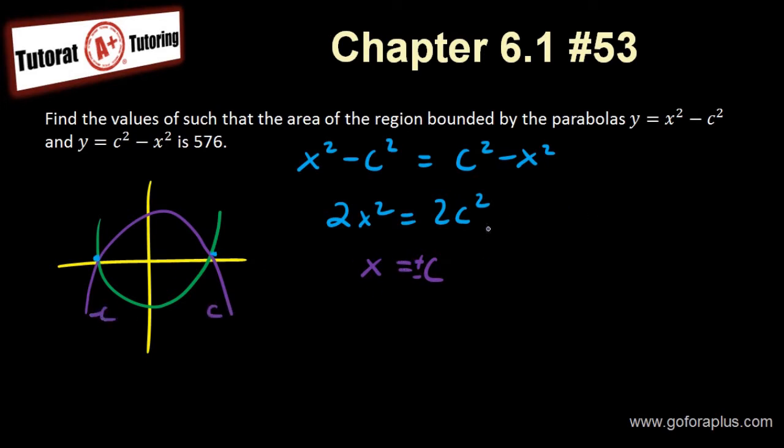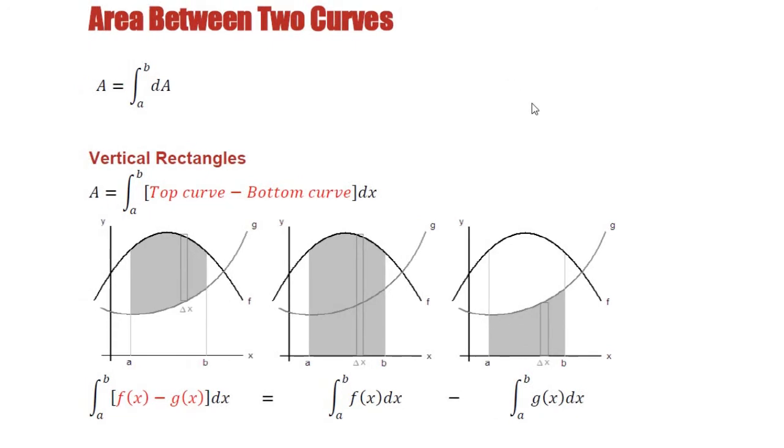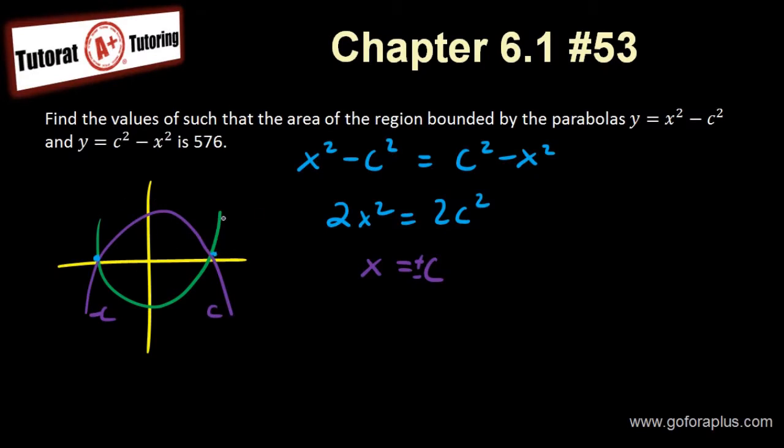So I know that is from minus c to c. So my integral is from minus c to c. Now the function, which one is on top, which one is at the bottom? The top one, I would say, is the negative one, right? So this function subtracts the other one. As I showed it to you before in my area between two curves, the summary of calculus 2. It's always the top curve minus the bottom curve.